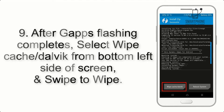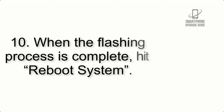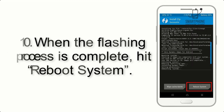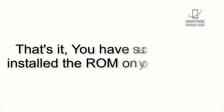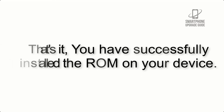Step 8: Flash the GApps zip package in the same manner. Step 9: After GApps flashing completes, select Wipe Cache and Dalvik from the bottom left side of the screen and swipe to wipe. Step 10: When the flashing process is complete, hit Reboot System. That's it — you have successfully installed the ROM on your device.